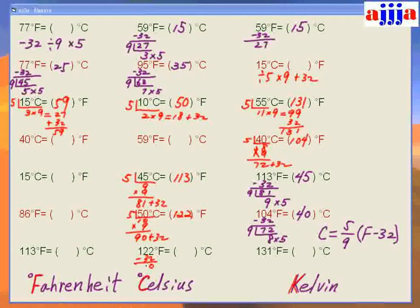Did we do 50? No — okay, let's try 50. Divide by 5, which is 10, times 9, which is 90, plus 32 — so easy! That's 122 degrees Fahrenheit.